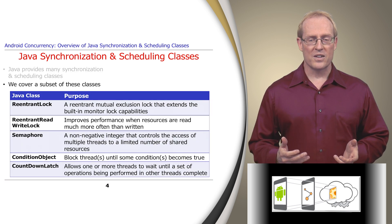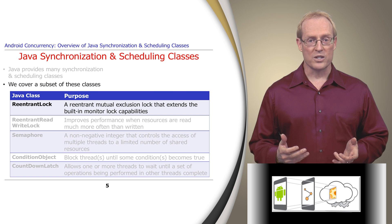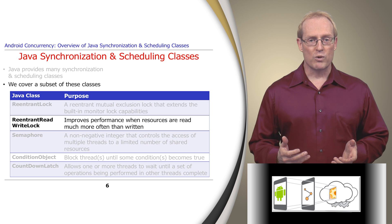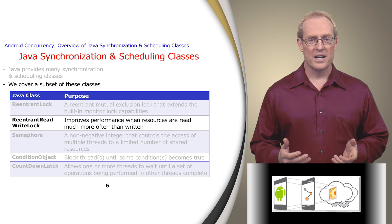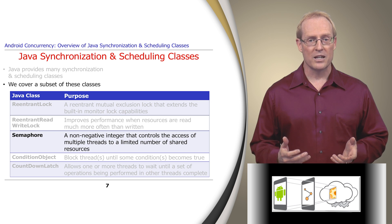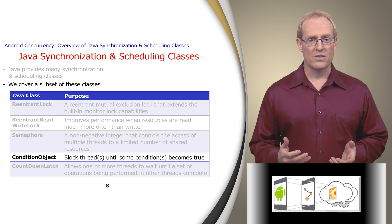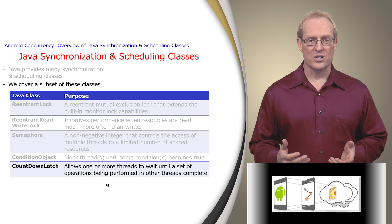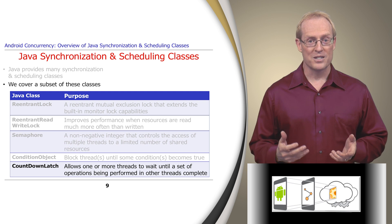We'll cover a subset of these classes, including ReentrantLock, which is a mutual exclusion mechanism that extends Java's built-in monitor lock capabilities. ReentrantReadWriteLock, which improves performance when resources are read much more often than they're written to. Semaphore, which is conceptually a non-negative integer used to control the access of multiple threads to a limited number of shared resources. ConditionObject, which allows threads to block themselves until some conditions involving shared state become true. And CountDownLatch, which allows one or more threads to wait until a set of operations being performed in other threads complete.